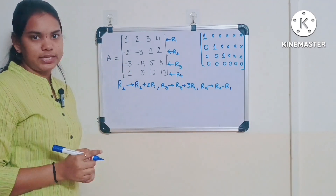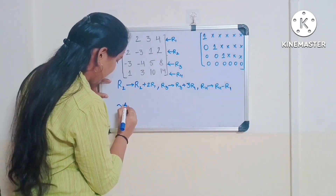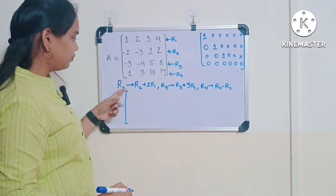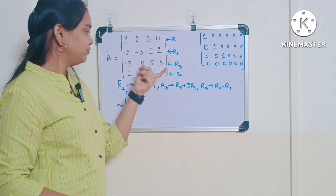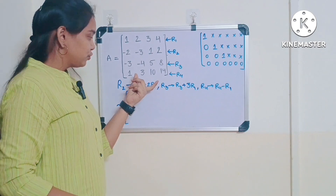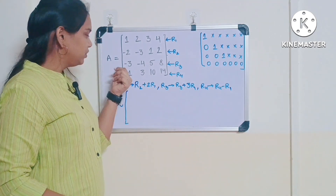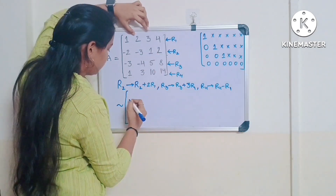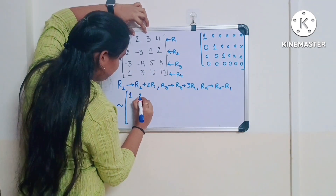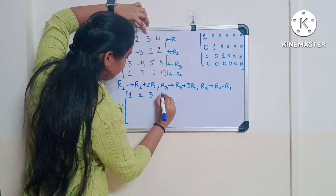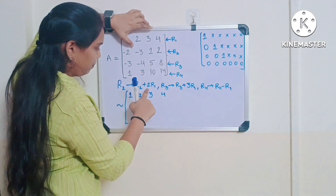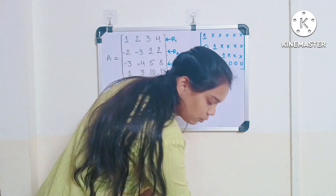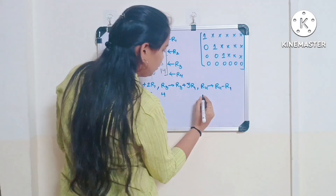We write 'equivalent to' rather than 'equal to' because we are performing row operations and changing the matrix. There is no change in R1, so we write it as is. Now let's apply the operations: R2 → R2 + 2×R1.